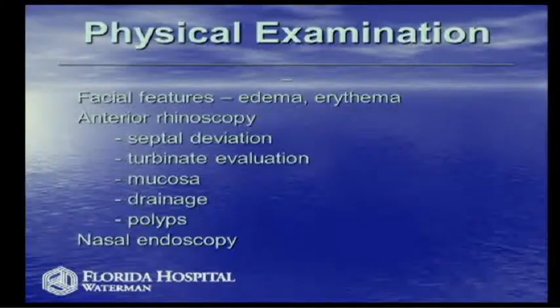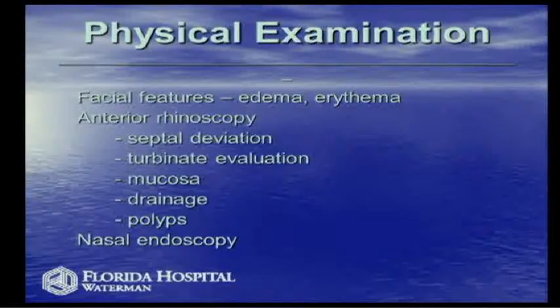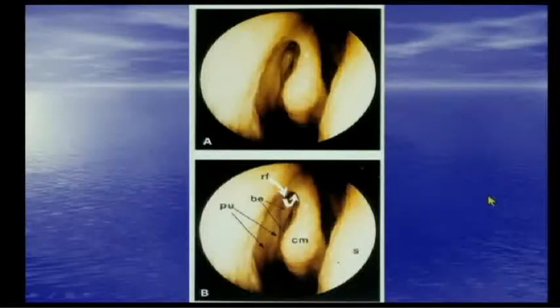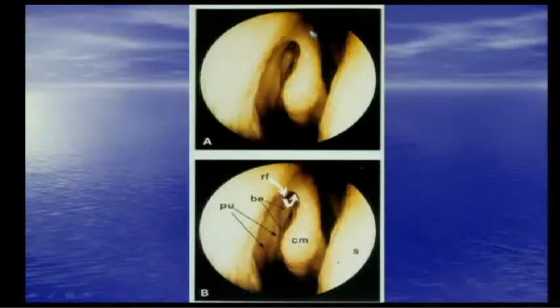Nasal endoscopy has been around for a while. We have telescopes to look further inside the nose and up into the sinuses to see what's actually going on. The nasal endoscope is a rigid scope that comes in different angles—zero degrees for straight, 30 degrees, 45 degrees, and even 70 degrees to look around corners. This is what we see when looking inside the nose: the nasal septum, the middle turbinate hanging from the side wall, and the opening into the sinus.